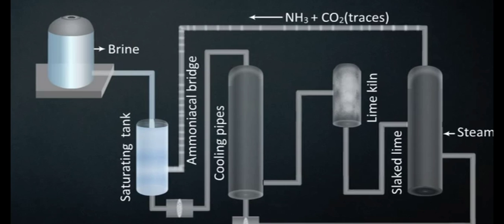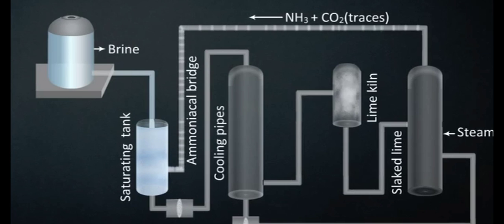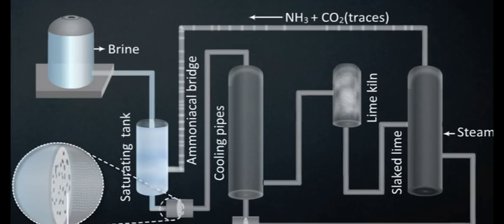The impurities of magnesium or calcium salts, if present in brine, are precipitated as their carbonates. The ammoniated brine is filtered as shown to remove the precipitates of calcium and magnesium carbonate.